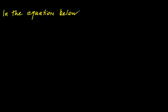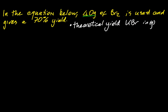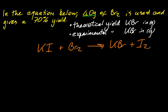All right then, let's try another example. In the equation below, 40 grams of bromine is used and gives a 70% yield. So I want to know the theoretical yield of potassium bromide. They used to put that allegedly in the tea in the English army so that people wouldn't feel sexy. It's a libido suppressant. I can't imagine being in a war as sexy.